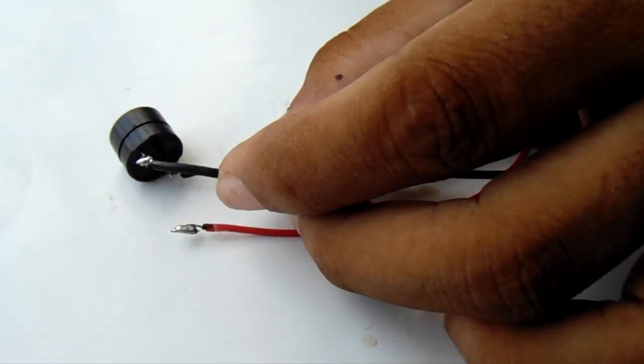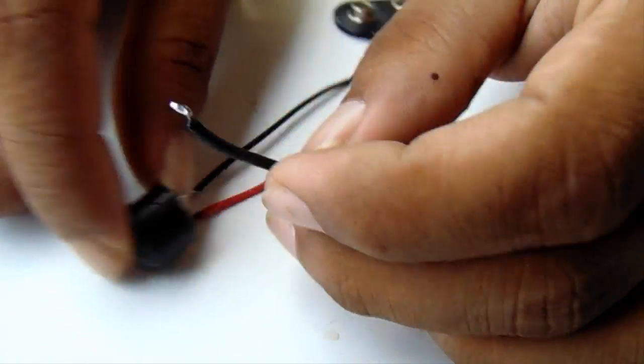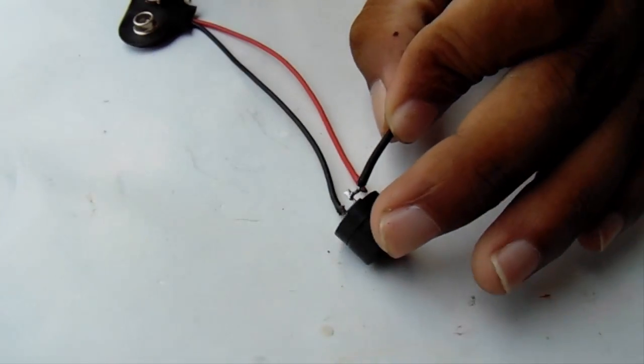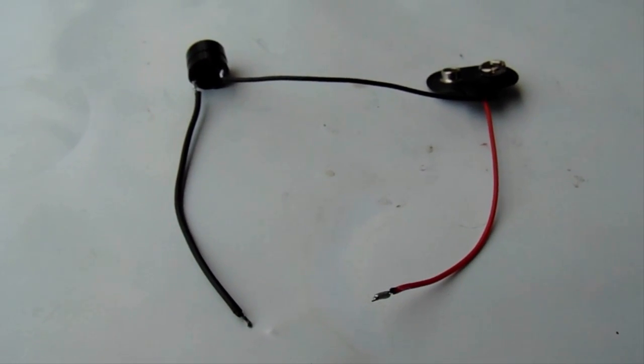Now you need to connect the buzzer's other pin with a single piece of wire. Your complete connection is like this.